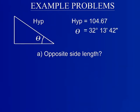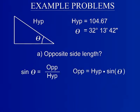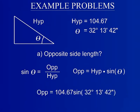First, the opposite side length will be solved using the sine function, because two of the three variables are known. Manipulate the sine function to solve for the opposite side length. Insert the given information to get a result of 55.82 feet.